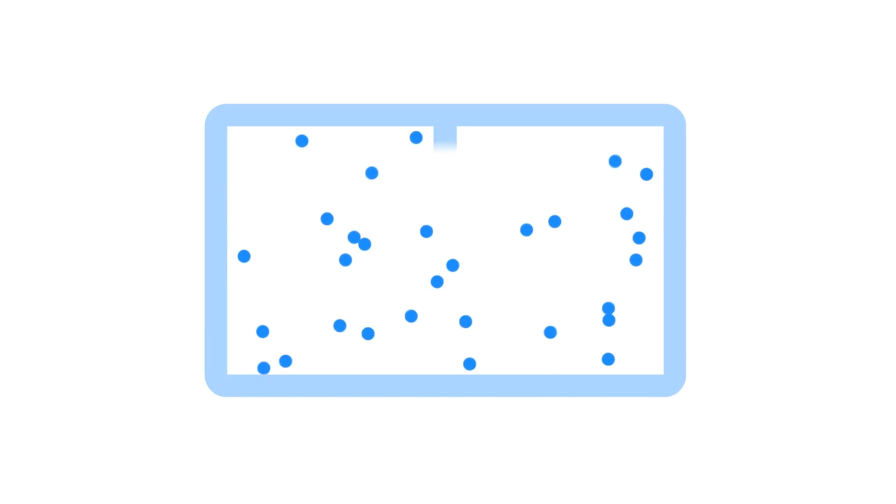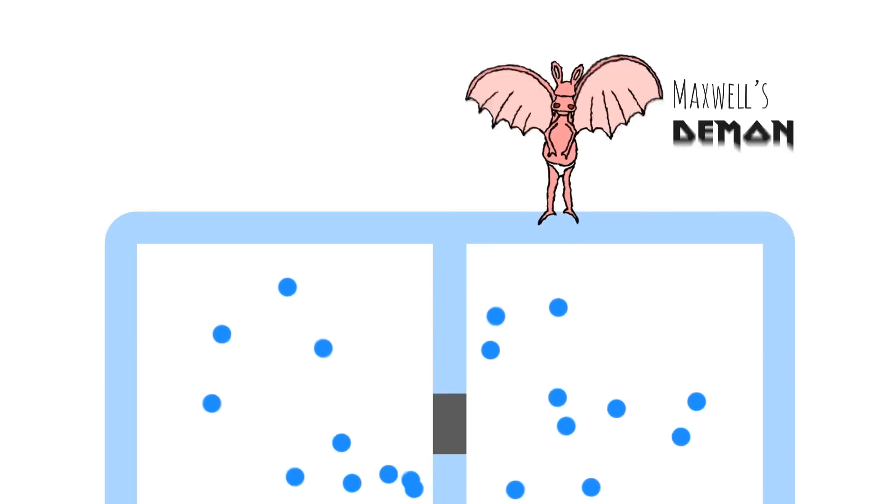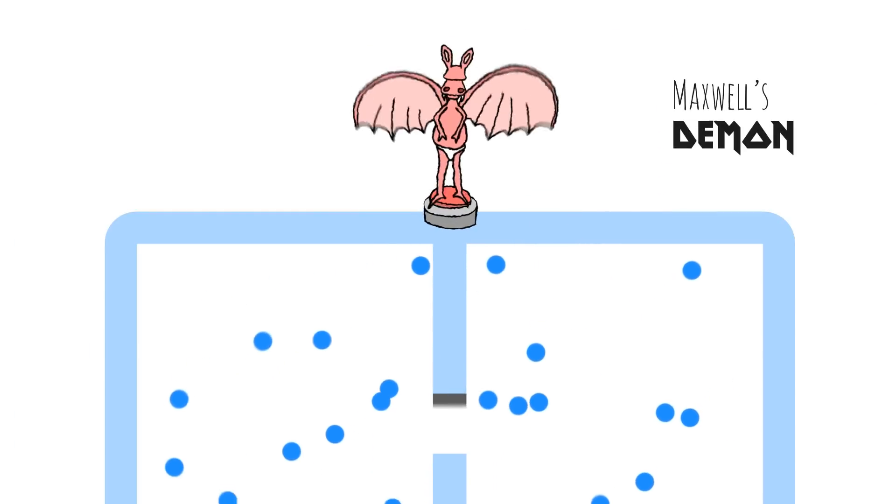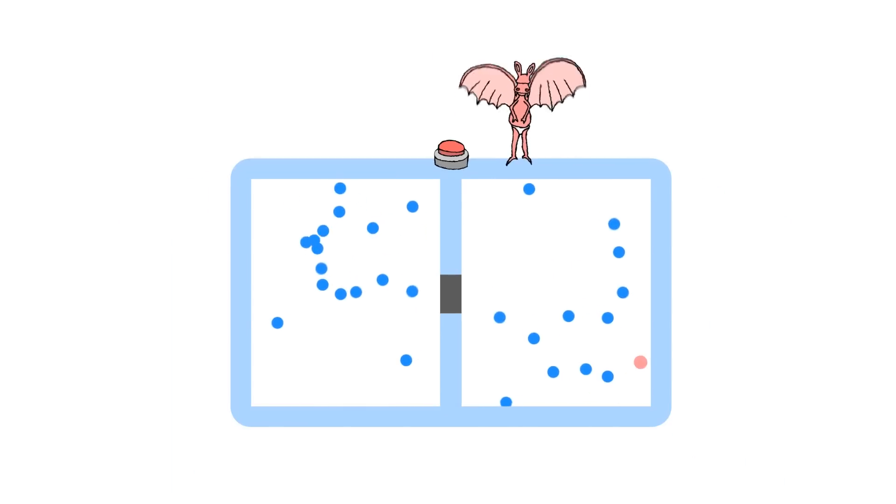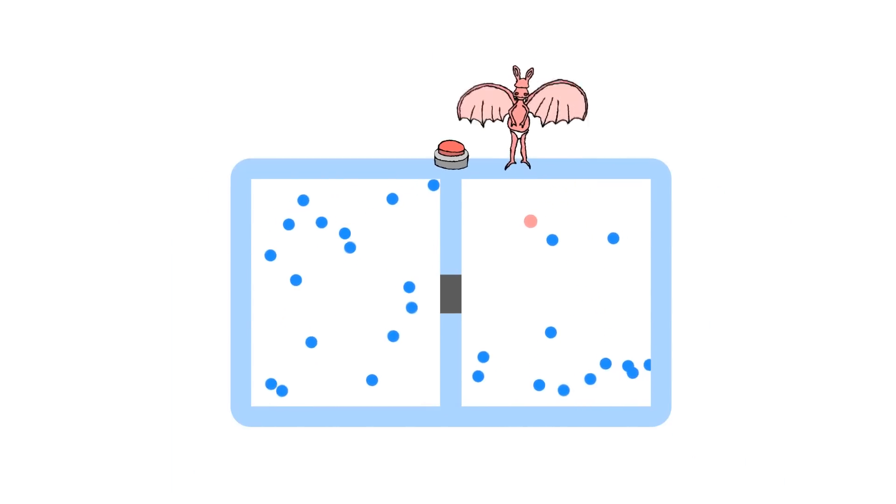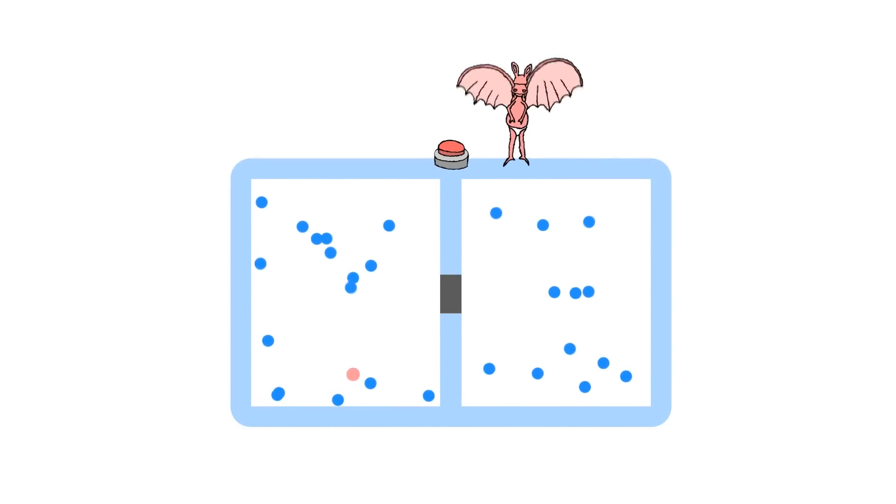But physics schmizzics, let's put up a wall, and a little tiny, tiny door, and a little, tiny, tiny demon creature with a button that opens and closes the door. If this demon knows which particles are moving faster, it can open the door at just the right time to let them through.